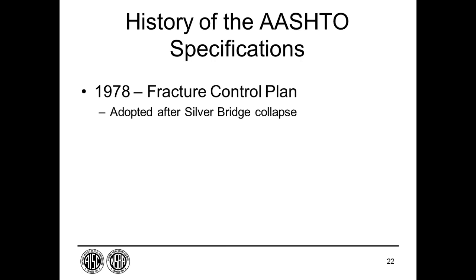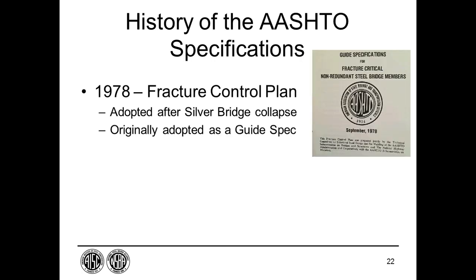In 1978, AASHTO adopted a fracture control plan in the aftermath of the Silver Bridge collapse in Point Pleasant, West Virginia in 1967 due to a brittle fracture, and some other fractures that had occurred. The plan was prepared jointly by the AASHTO Technical Committees on Steel Design and on Welding and the FHWA in consultation with the industry and the AASHTO Subcommittee on Materials. The plan was initially adopted as a guide specification.